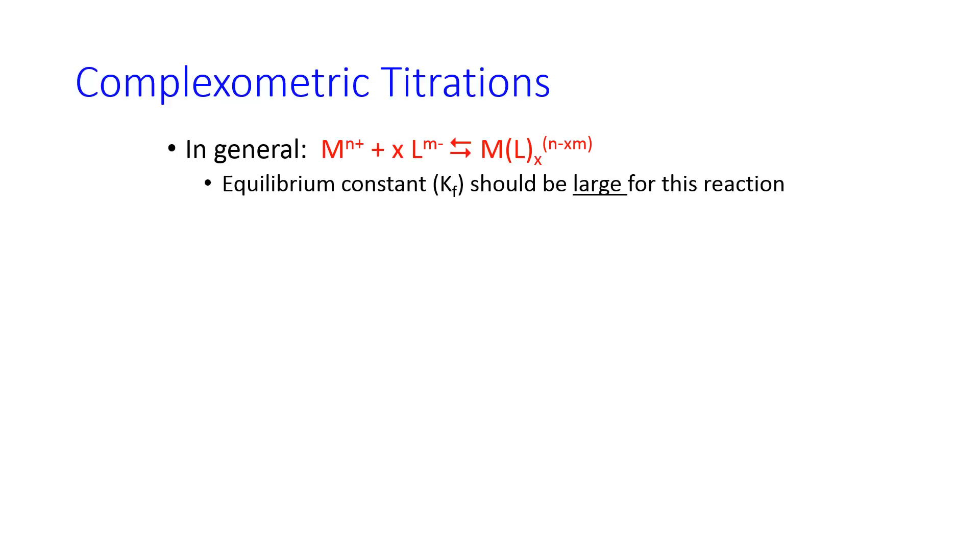In general, the equilibrium that we're worried about here is a metal ion of some kind, represented by M, reacting with a ligand, which is denoted L, to give the metal ligand complex. The equilibrium constant for this reaction is known as KF, the formation constant, and we want it to ideally be large. This comes from our rule for titrations that they should go to completion.